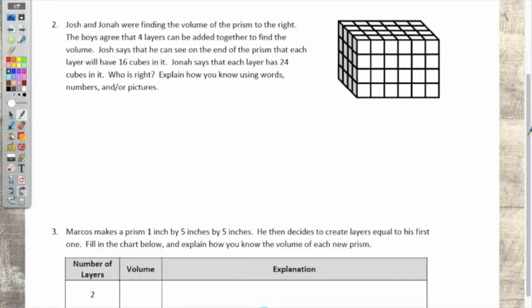So the boys agreed that four layers can be added together to find the volume. Josh says that he can see on the end of the prism that each layer will have 16 cubes in it. Jonah says, why are you touching your cubes? Scoot them back. Jonah says that each layer has 24 cubes in it. So what they're saying is they're both saying you can make four layers. Okay. Who is right, explain how you know using words, numbers, and or pictures.